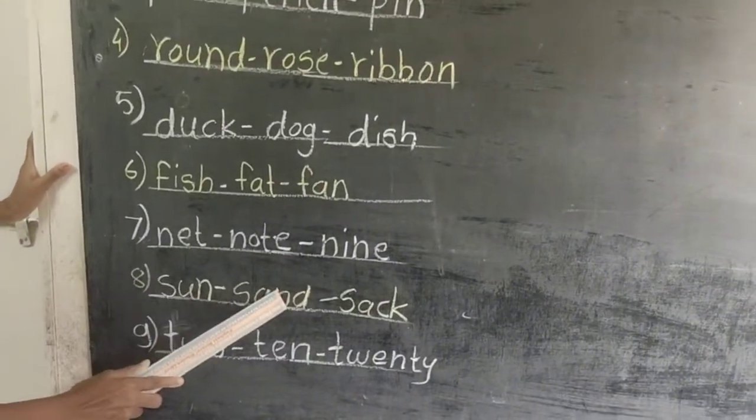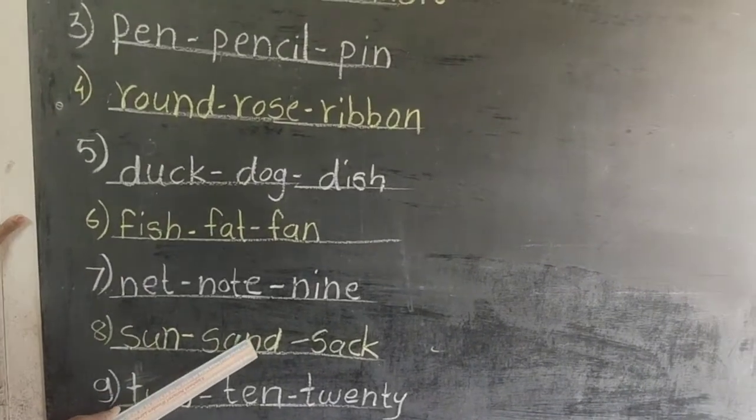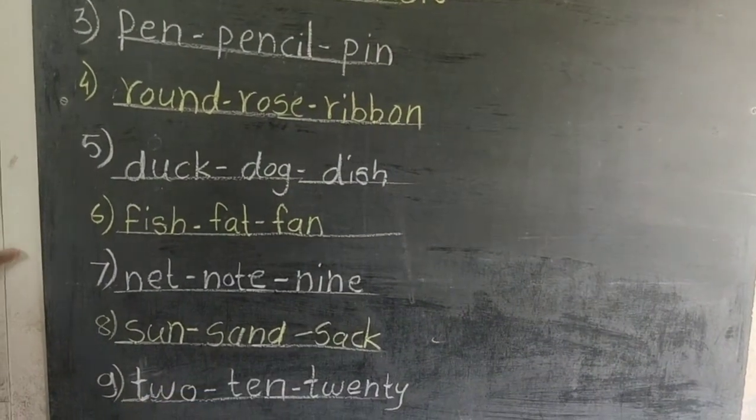Eight, sun, sand, set. Sun mean surya, sand mean walu, set mean potom.